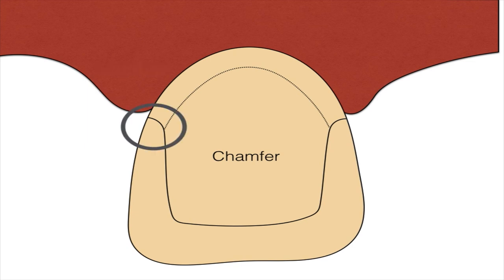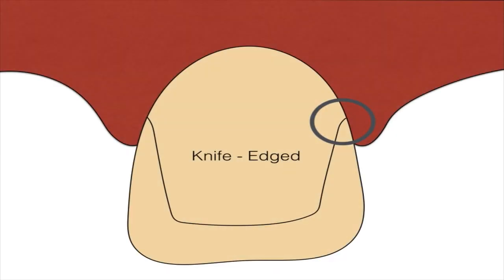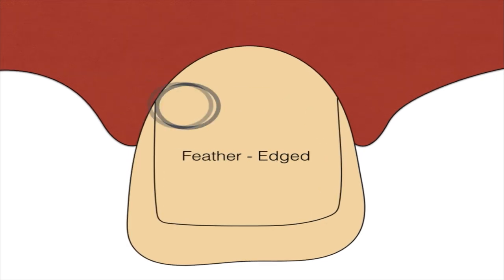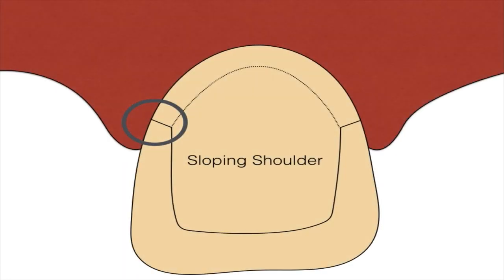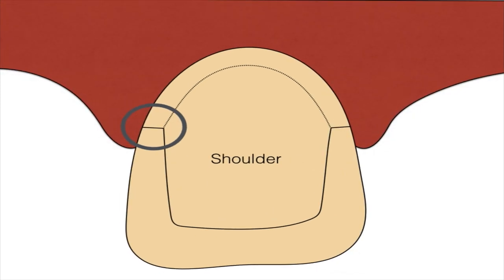As far as finish line configuration goes, chamfer finish lines are preferred for all-metal restorations. You can give a knife edge when you have limited tooth structure and it abruptly ends in a sharp tip. A feather edge is a long, thin, sharp-tip margin given when you have even less tooth structure available — usually given for lower premolars which already have a 9-degree lingual tilt. Sloping shoulders are given for the labial surface of canines for all-ceramic restorations. Shoulders are given wherever there is ceramic surface, and ceramic should always end in a 90-degree margin.